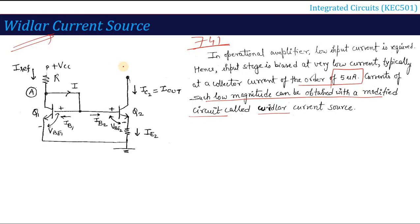This is the Widlar current source circuit. Here we have the same resistance and reference current, with two transistors Q1 and Q2 with the same base connected. The difference is that we have added an emitter resistor RE. Due to this emitter resistor, the VBE of the two transistors are no longer equal, so VBE1 ≠ VBE2 and the collector currents are not equal either.